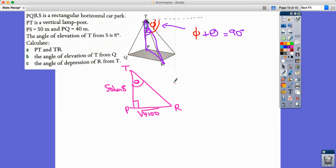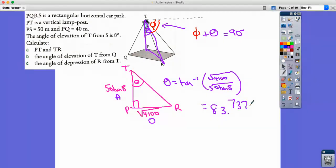What do I know? I know that this is the adjacent, I know this is the opposite, it's tan. So I'm going to do tan to the minus 1 to find my theta. Tan to the minus 1, and opposite over adjacent, so it's going to be square root of 4100 divided by 50 tan 8. Really using my calculator at this point, so square root of 4100 divided by 50 tan 8, and then do the inverse tan, so shift tan answer equals. Now this answer comes out as 83.737196.